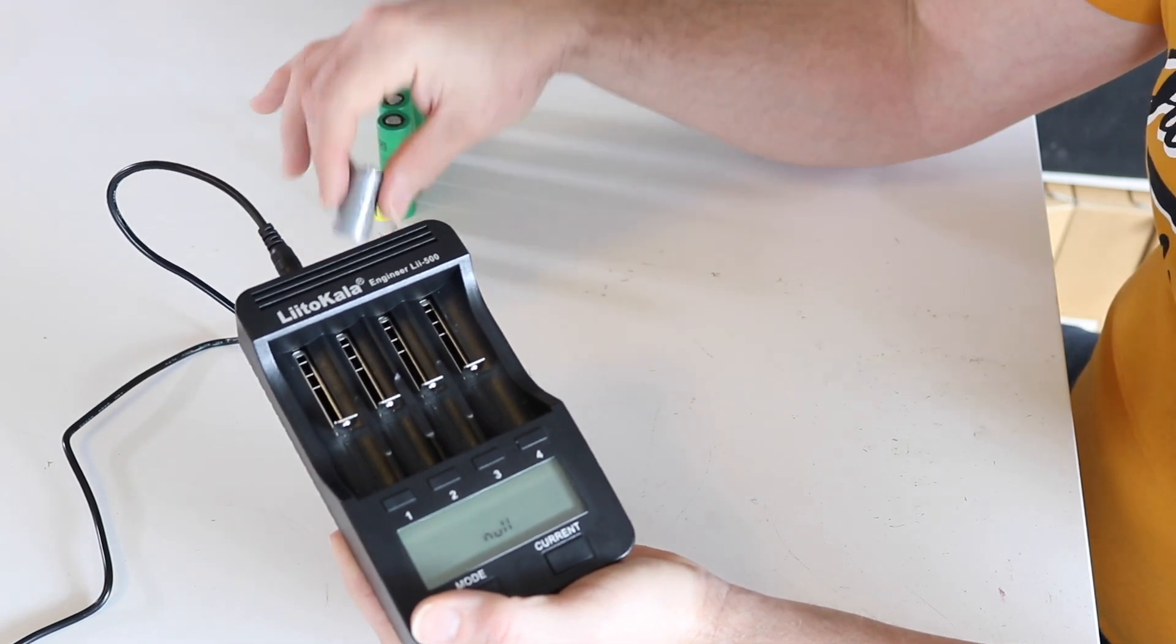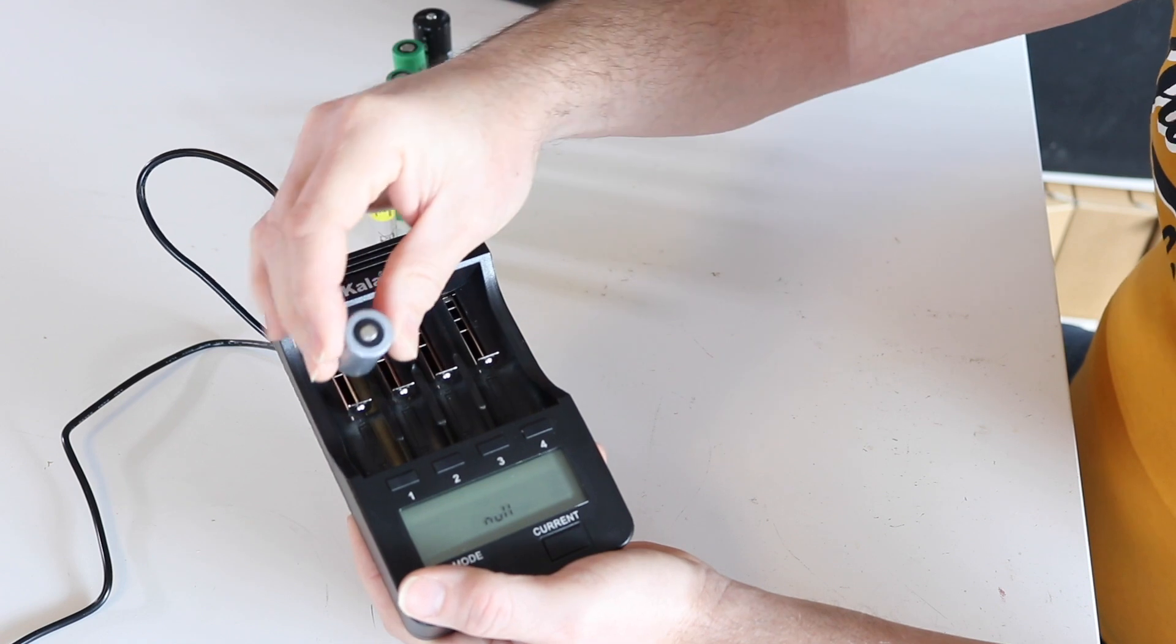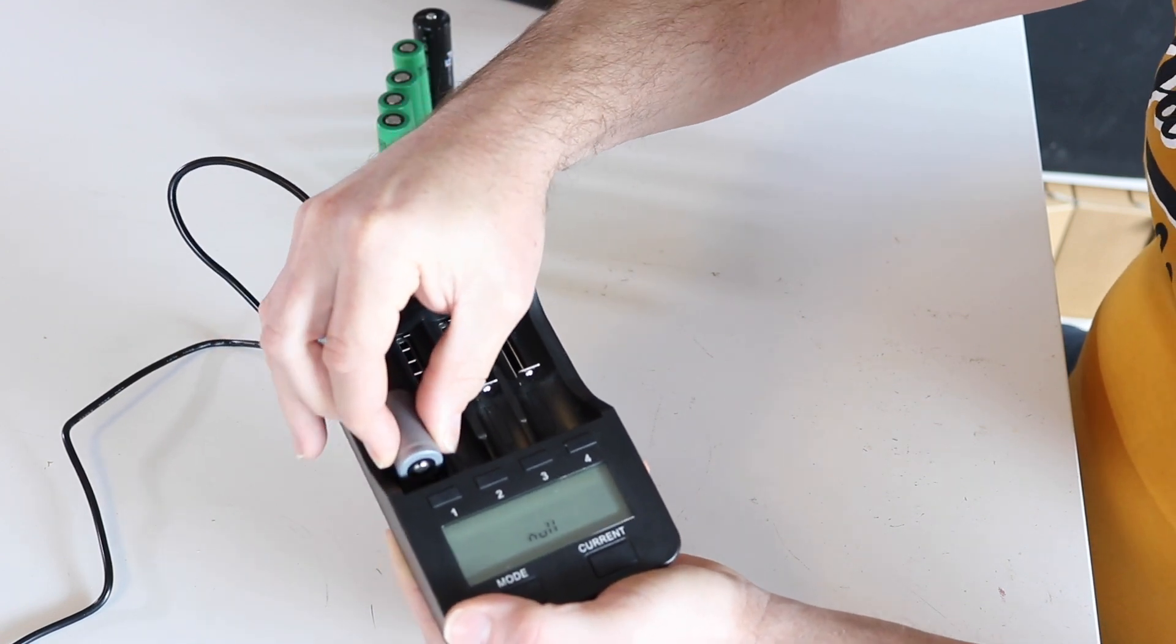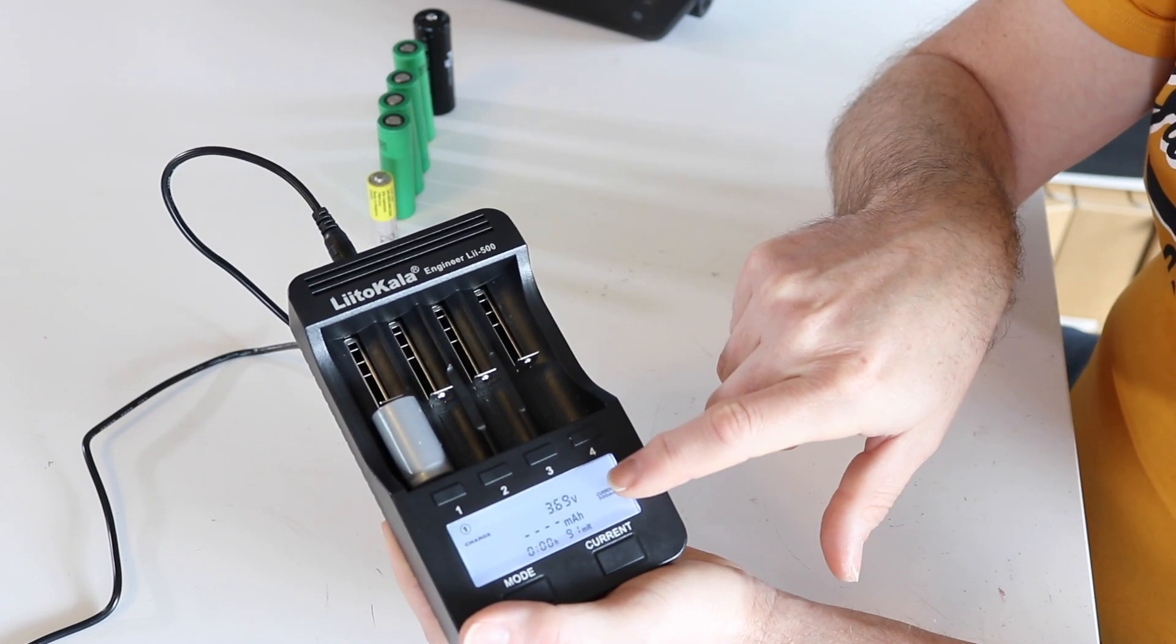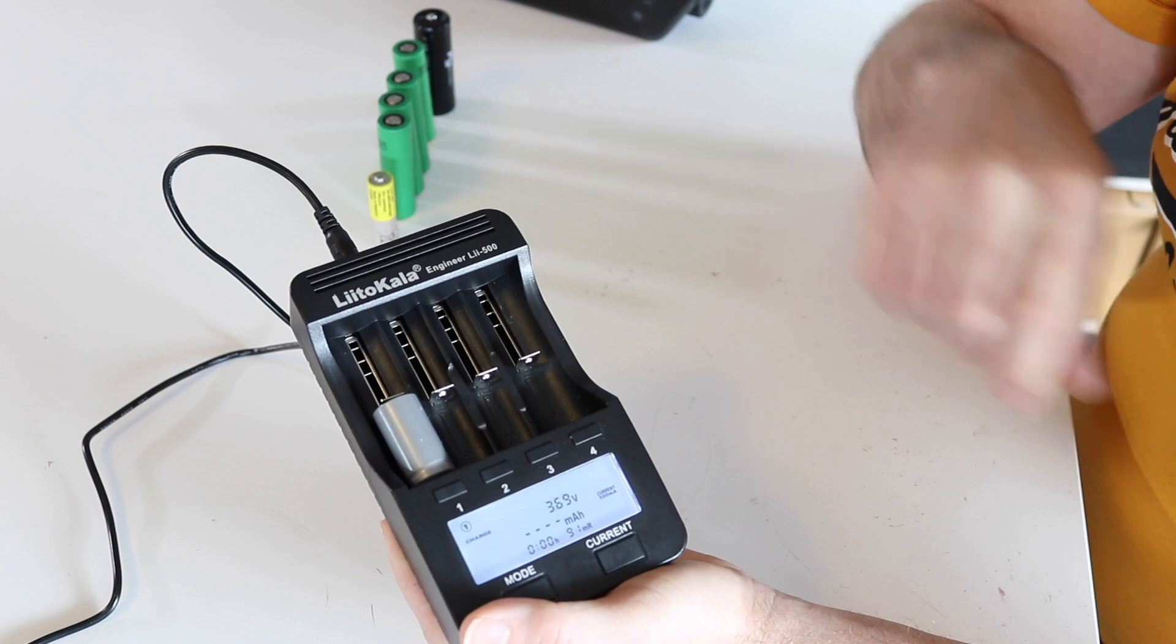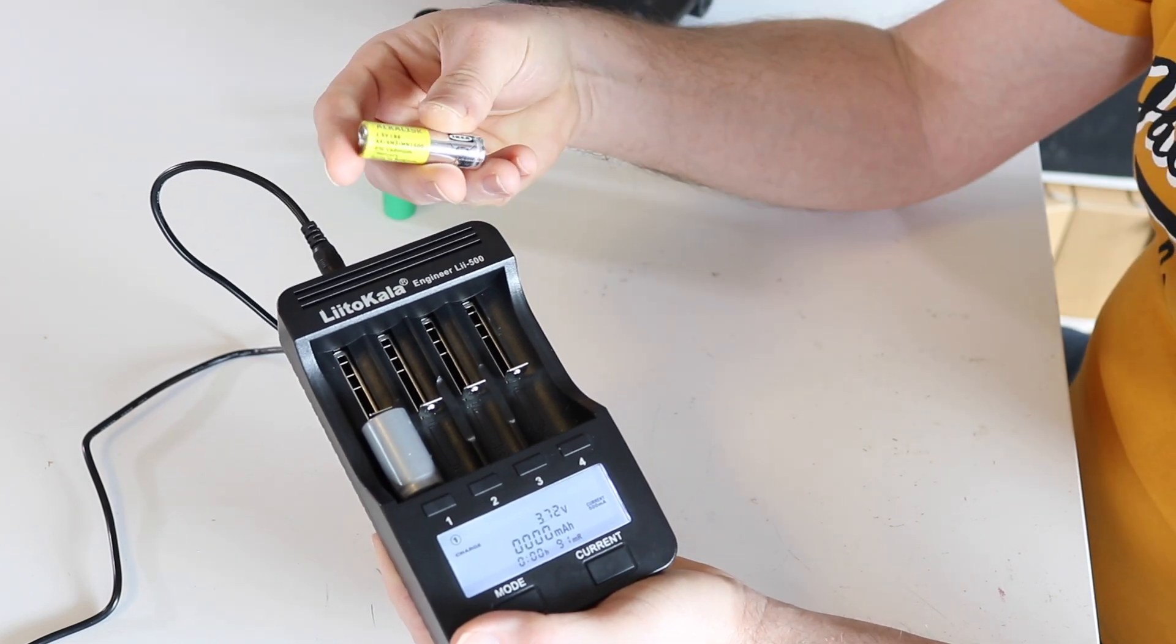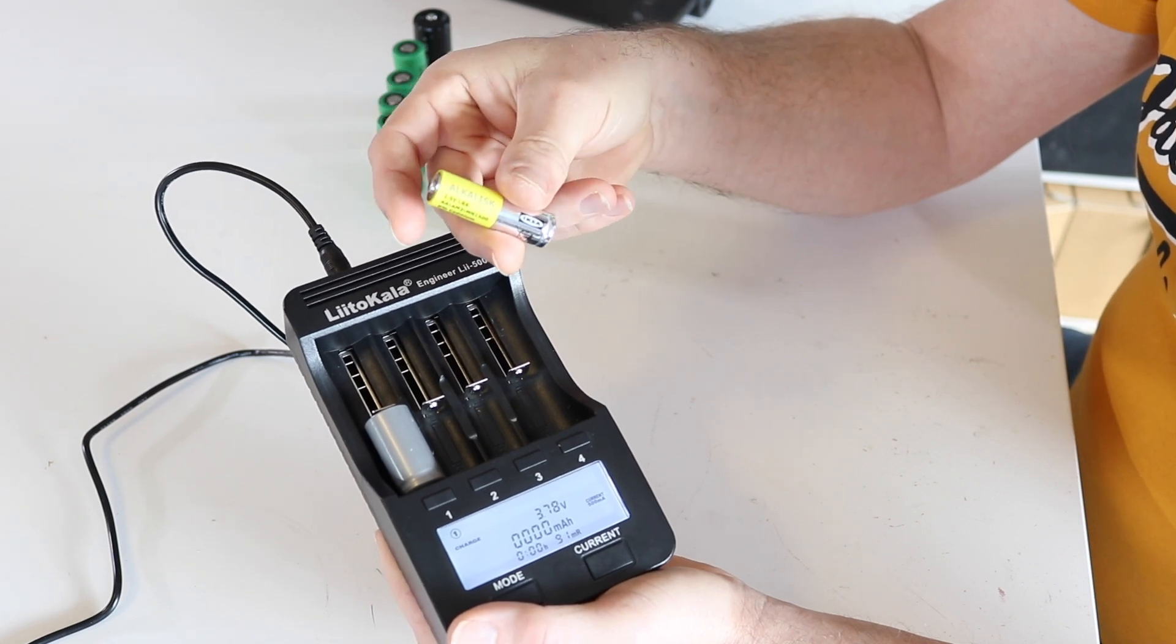So you have seen that I have put in 18650 cells here. I have an 18350 cell—also this cell will go in there. As you see, it already shows 3.69 volts, so this functions.